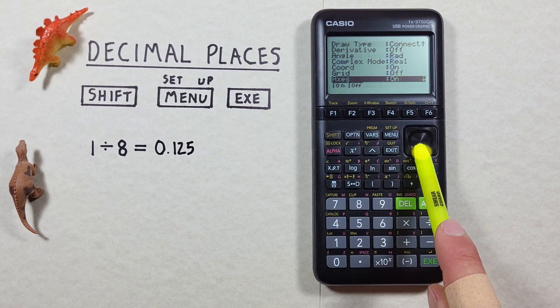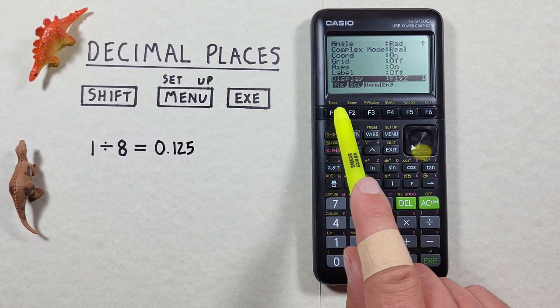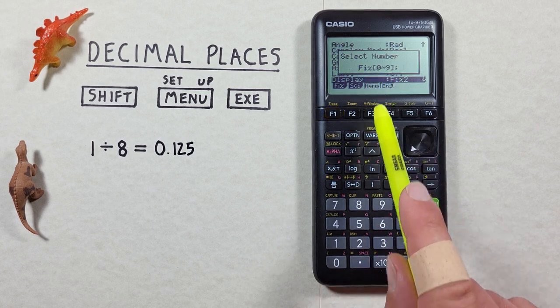If we want to set it to one decimal place, we can do the same thing with shift menu, scroll down to display, hit F1 for fix, and then choose one decimal place.